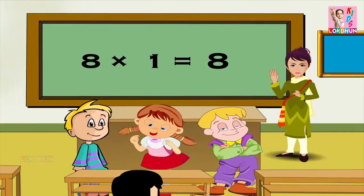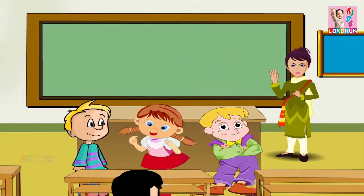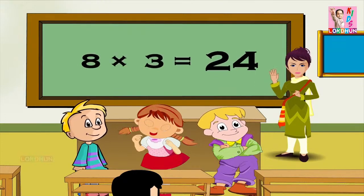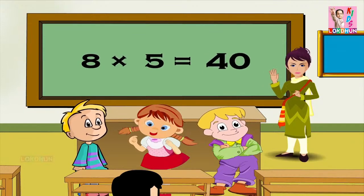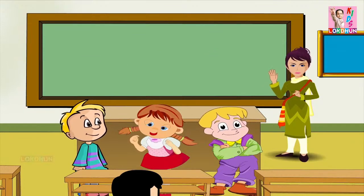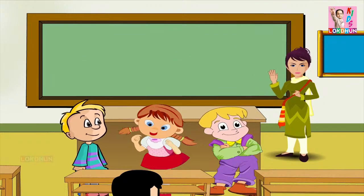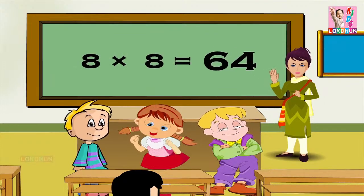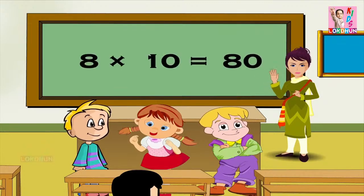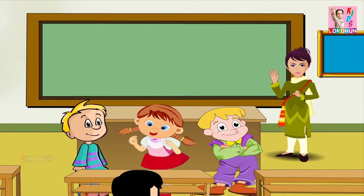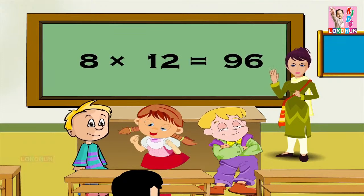Eight ones are eight, eight twos are sixteen, eight threes are twenty-four, eight fours are thirty-two, eight fives are forty, eight sixes are forty-eight, eight sevens are fifty-six, eight eights are sixty-four, eight nines are seventy-two, eight tens are eighty, eight elevens are eighty-eight, and eight twelves are ninety-six.